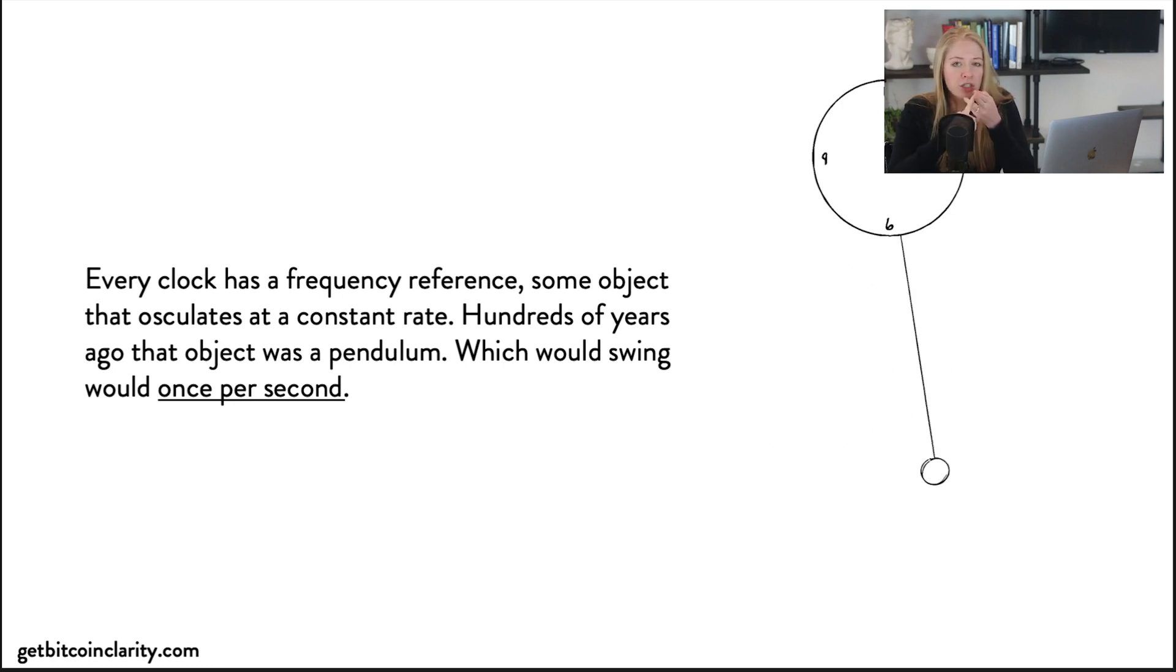I'm going to bring up three different examples of clocks. We have a pendulum, a quartz crystal, and an atomic clock. This one's the simplest—a pendulum swing where every one swing represents one second. So that oscillates back and forth, also called the frequency reference, and that constant rate is how we measure time. The faster the frequency reference happens, the more accurate it is.